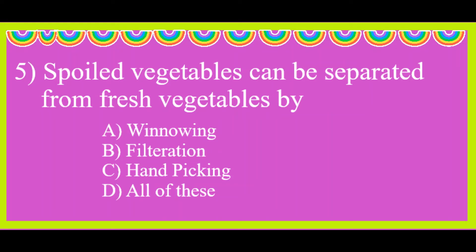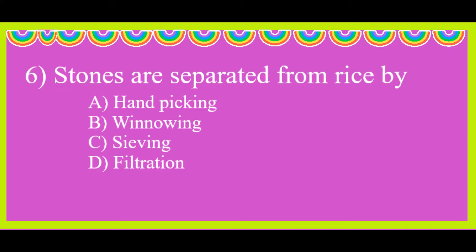Fifth question: spoiled vegetables can be separated from fresh vegetables by handpicking.